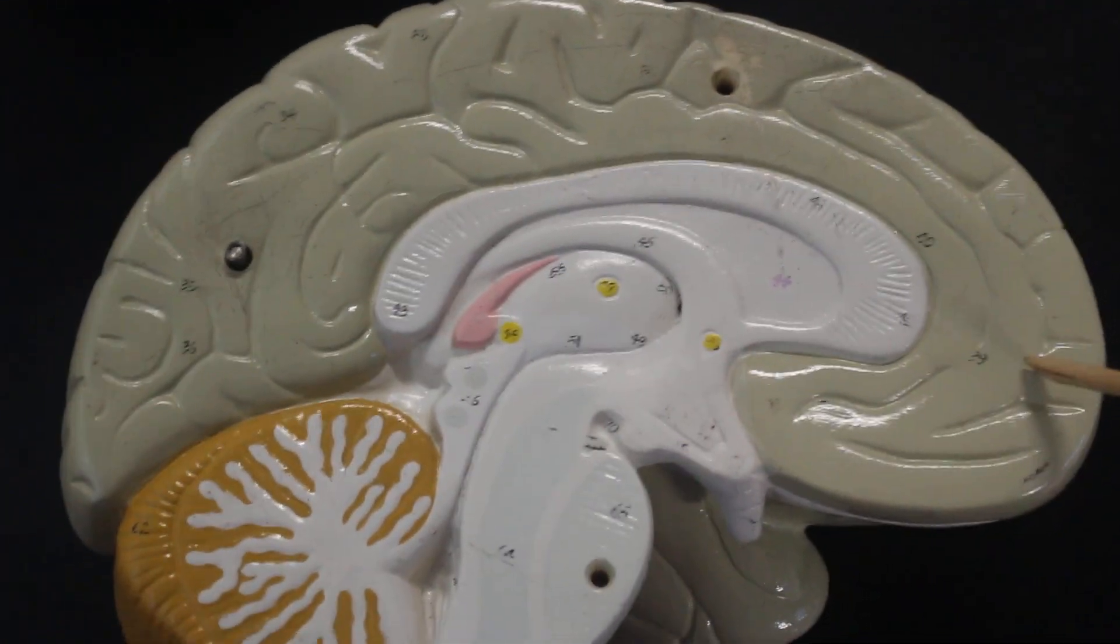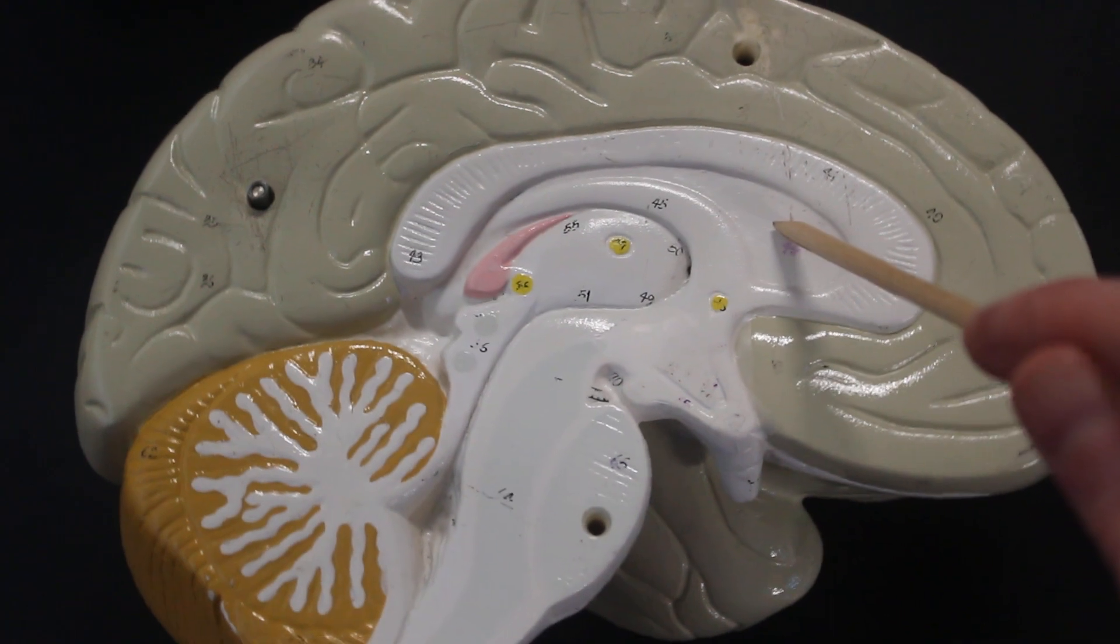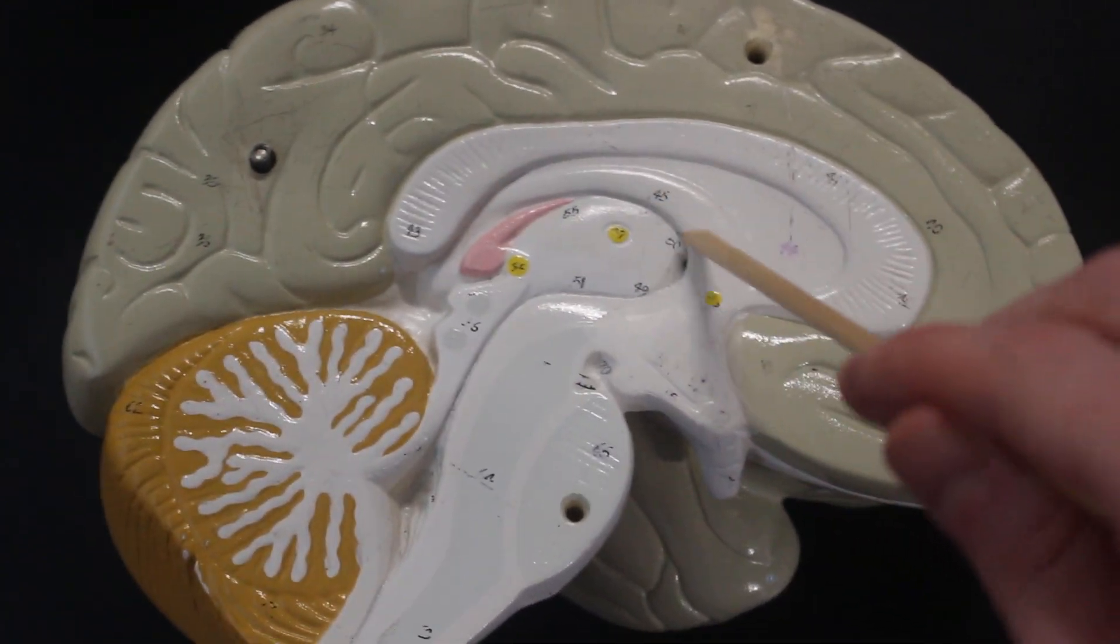All right, from there we can look at a mid-sagittal view of the brain. So again, this is all cerebrum. This structure here is corpus callosum, septum pellucidum. This is the fornix.